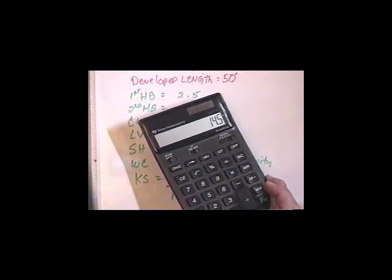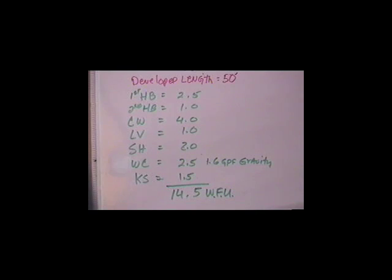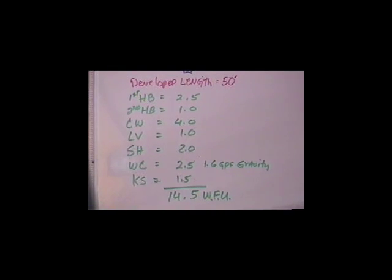What do you know? I got the correct answer. I actually did that in my head and got the correct answer: 14.5 water fixture units. Now, once we know the developed length and the water fixture units, the next thing we need to know for sizing water pipe is what is the pressure of our system?